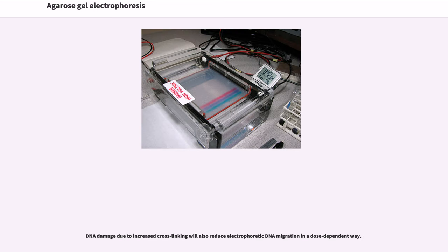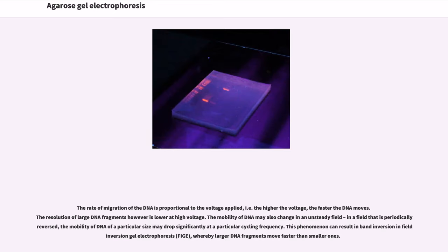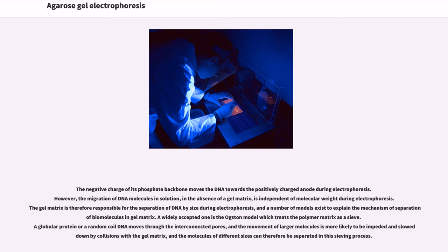DNA damage due to increased cross-linking will also reduce electrophoretic DNA migration in a dose-dependent way. The rate of migration of DNA is proportional to the voltage applied; the higher the voltage, the faster the DNA moves. The resolution of large DNA fragments however is lower at high voltage. The mobility of DNA may also change in an unsteady field; in a field that is periodically reversed, the mobility of DNA of a particular size may drop significantly at a particular cycling frequency. This phenomenon can result in band inversion and field inversion gel electrophoresis (FIGE), whereby larger DNA fragments move faster than smaller ones.